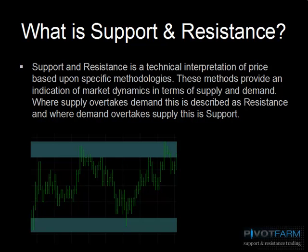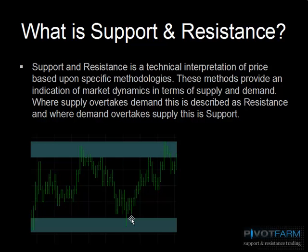Very simply, this means we may have a support area where demand is coming into the marketplace, taking the price higher. We then encounter an area of resistance where supply is likely to come in, taking the market lower. It's this relationship between supply and demand that support/resistance can be used to highlight or predict — it's a very simple and straightforward concept.